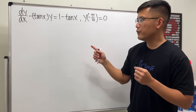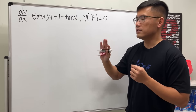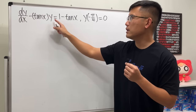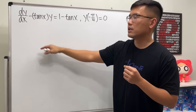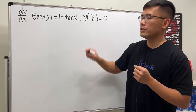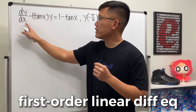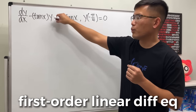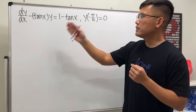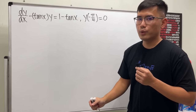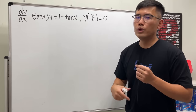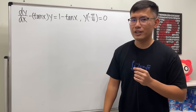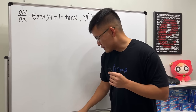The third question is very different from the previous two because it is not separable. We have dy/dx - tan(x)·y = 1 - tan(x). This is a first-order linear differential equation because all derivatives and y's are of the first power. The method we use is the integrating factor.